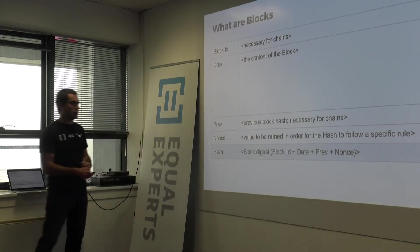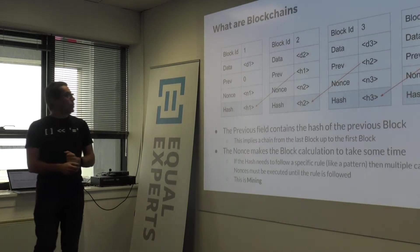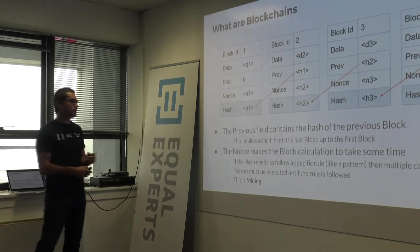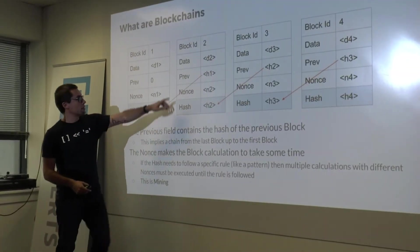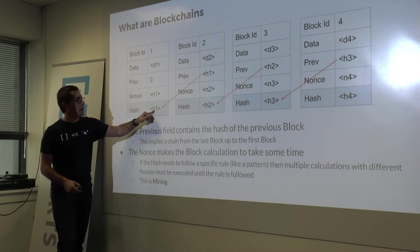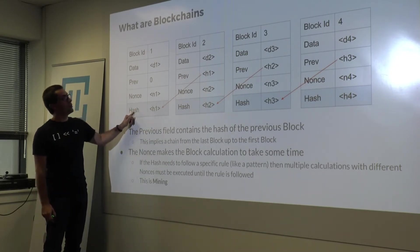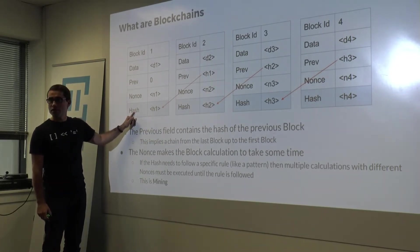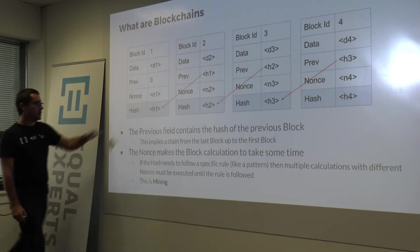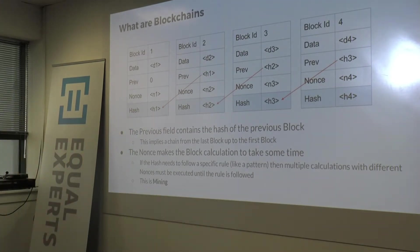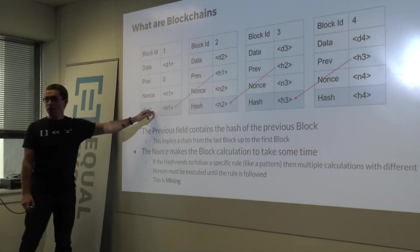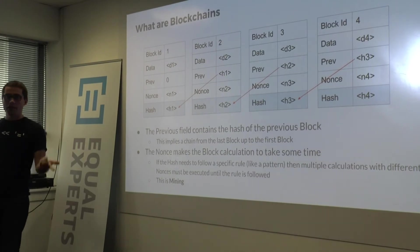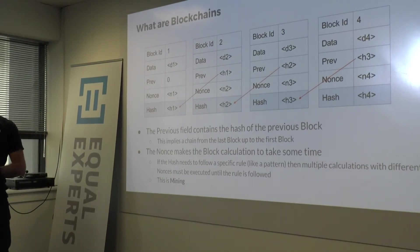When we have a blockchain, the previous field will have the same value as the hash of the previous block. It's as simple as that — this is the blockchain. This implies that there is a chain from the last block all the way to the first one. In Bitcoin, we can follow links from the last block back to the very first block ever created.